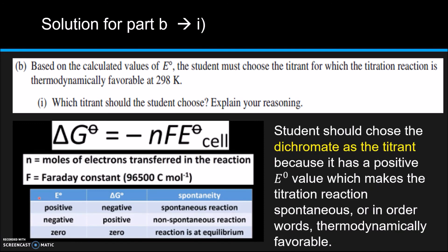So we're searching for the titrant reaction which gives you a negative value for ΔG. So the student should choose the dichromate as titrant because it has a positive E⁰ value, which makes the titration reaction spontaneous, or in other words, thermodynamically favorable.